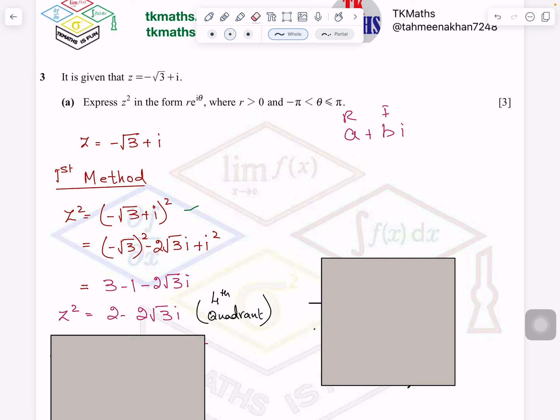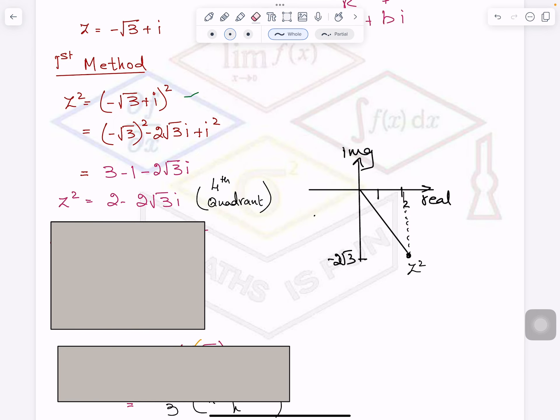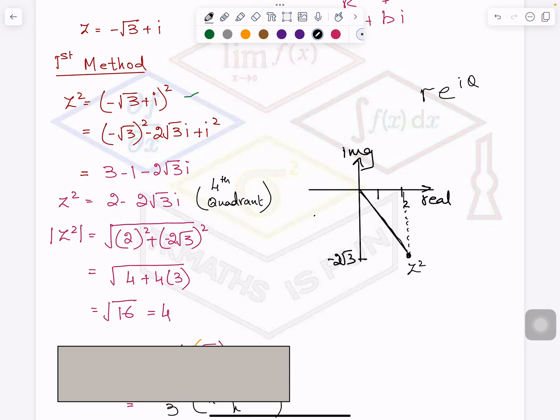So now, you can see here, I have identified the quadrant here, which I explained to you as well. And now, because I have to express Z square in the form R e^(iθ), I can easily find out this length with the help of Pythagoras theorem. Agreed?